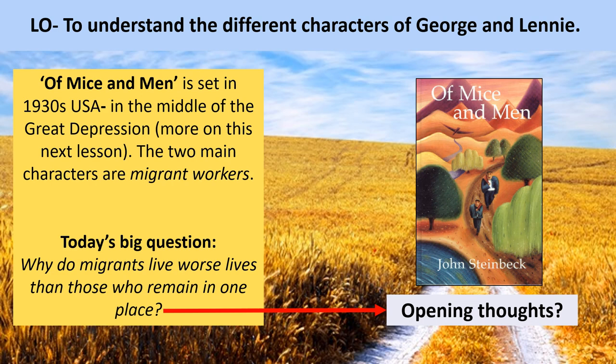You can link this back to some of our earliest history where originally mankind were hunter gatherers — we didn't stay in one place. Part of our evolution was to start putting down roots and building our own homesteads. But there are still people who move around a lot. We call these people nomadic sometimes, or migrants. So that big question: why is it that migrants live worse lives than those who remain in one place?